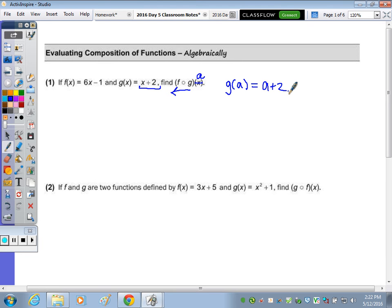Now I have to do F. For a composition, we take the answer we just got and substitute it into the second function. So F of A plus 2, here's the F function, means we do 6 times the X, which is now our A plus 2, minus 1.